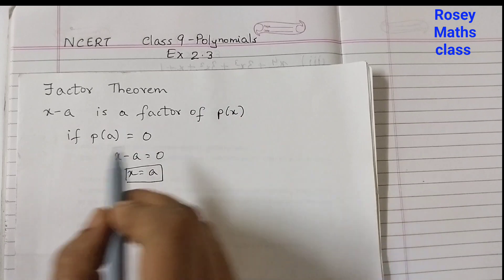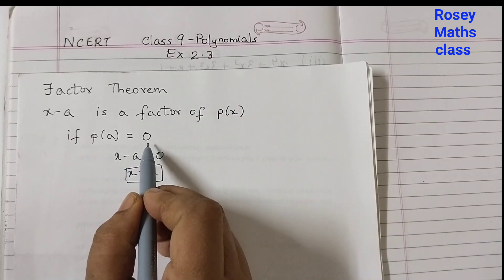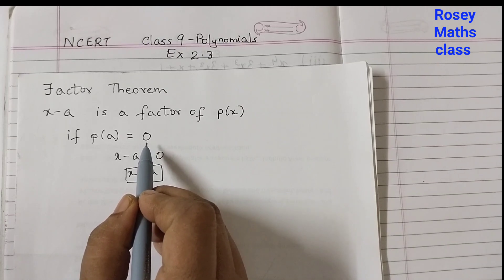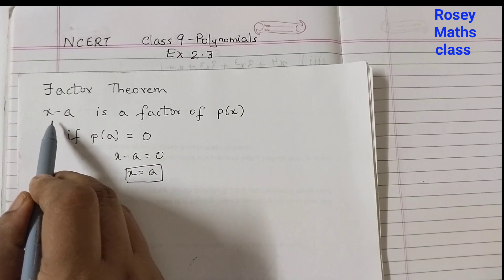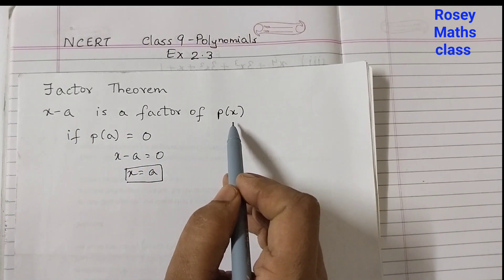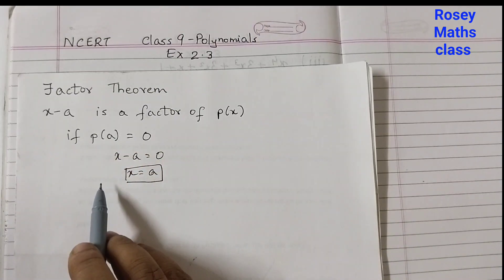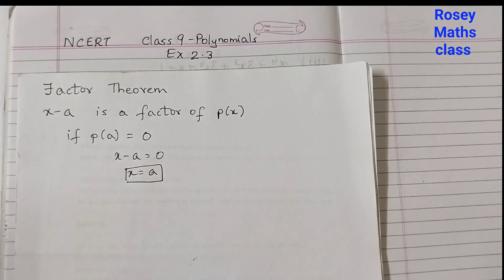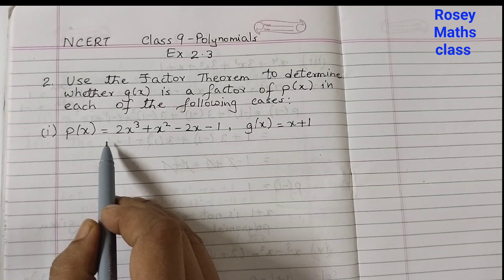This value of x you need to substitute into p(x), and it will become p(a). When you substitute that, if you get 0 after simplifying, then that means x minus a is a factor of p(x). You will understand this better when you do the problems, so just remember this is what we need to use.